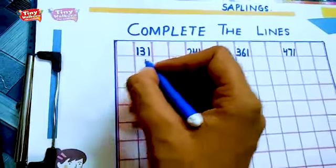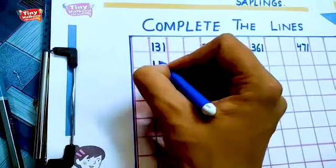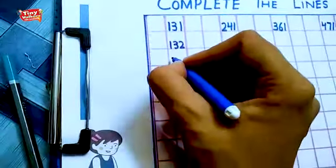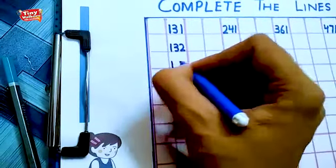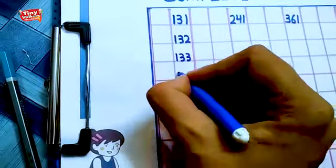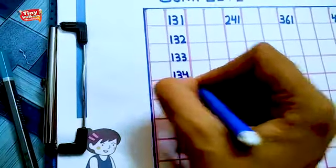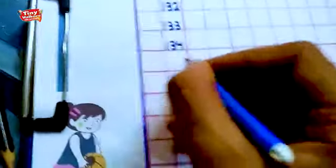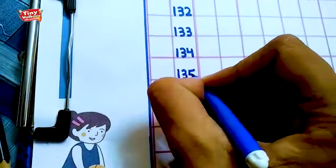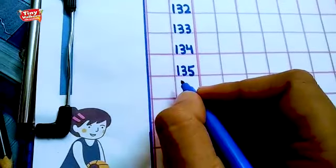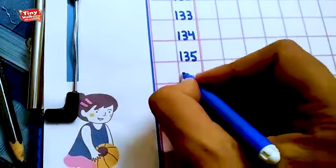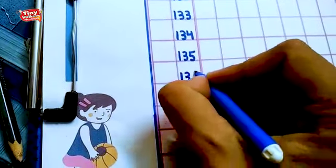After 131 is 132. After 132 is 133, 134. After 134 is 135. Tell me beta, what comes after 135? Yes, 136.